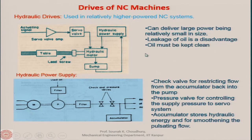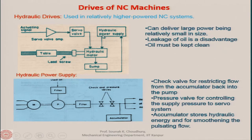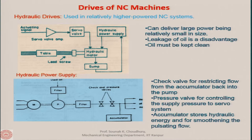From the hydraulic power supply, the output goes to the axis motors — there could be 3 motors for 3 axes or more for a 5-axis machine. One axis is shown going to the hydraulic motor, which rotates the lead screw along with the table. The greatest advantage of hydraulic motors is their very high torque carrying capacity in a very compact, small size.